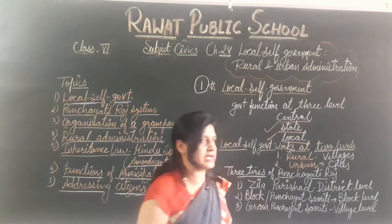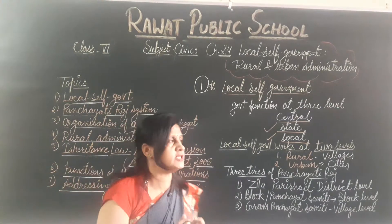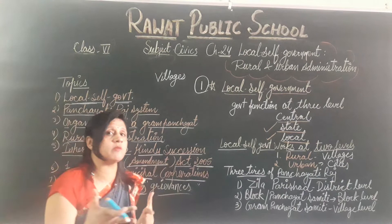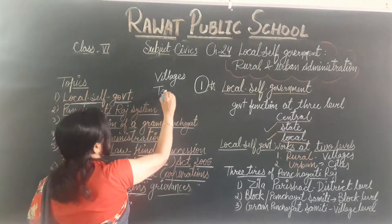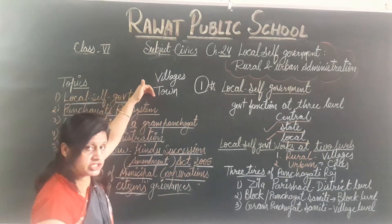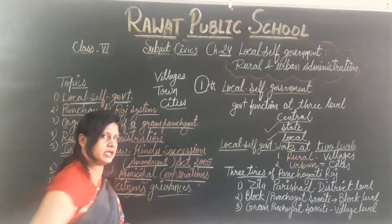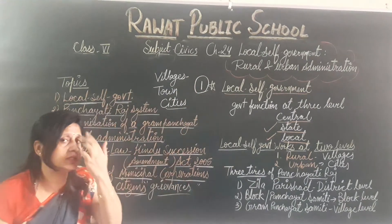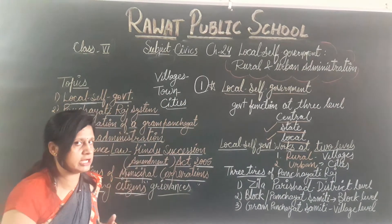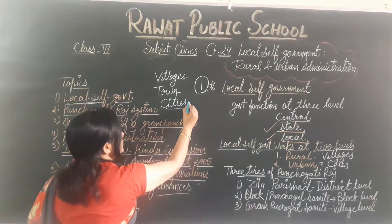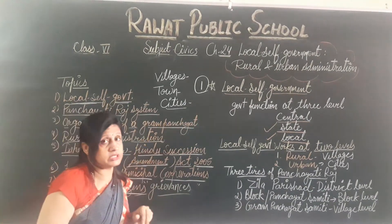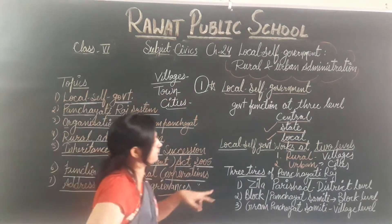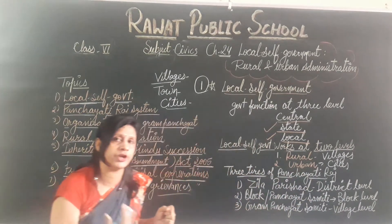Now, three tiers of the Panchayati Raj. The smallest unit of the area is the village, then town, and then city. In the village, Panchayati Raj works. In the town, Municipality — also known as Nagarpalika — works. And in big cities, the local government works through the Municipal Corporation, also known as Nagar Nigam. So we are talking about the Panchayati Raj and how it works at different levels.